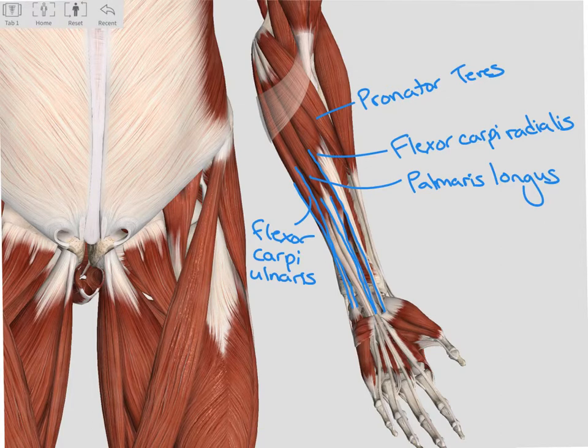So going from the thumb side lateral to medial, we have flexor carpi radialis, palmaris longus, flexor carpi ulnaris.